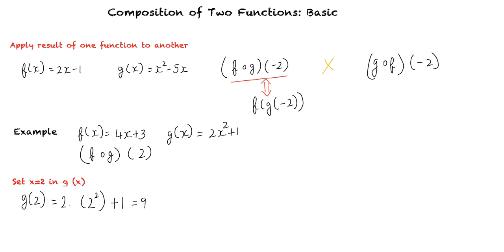Now, the final step is to substitute this result for x in the f(x) function. Hence we are required to evaluate f(9). f(9) = 4(9) + 3 which equals 39.